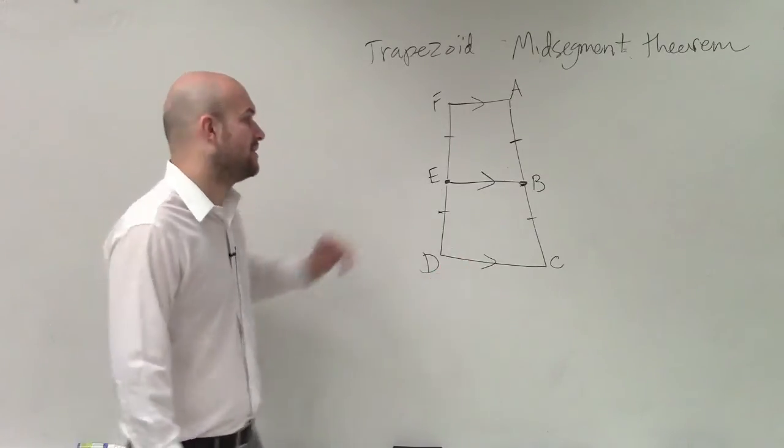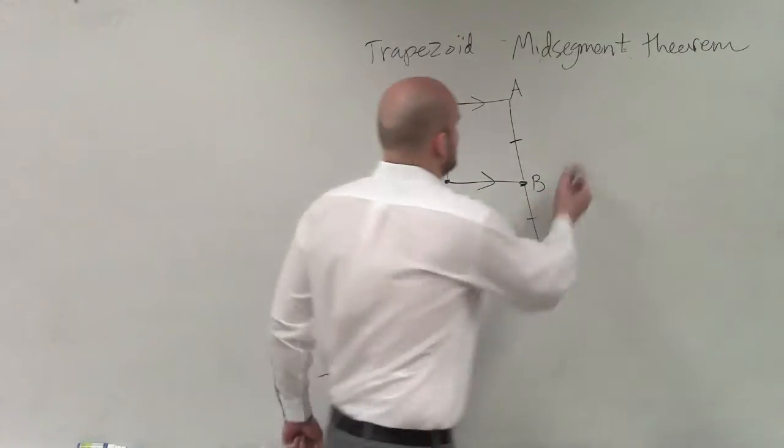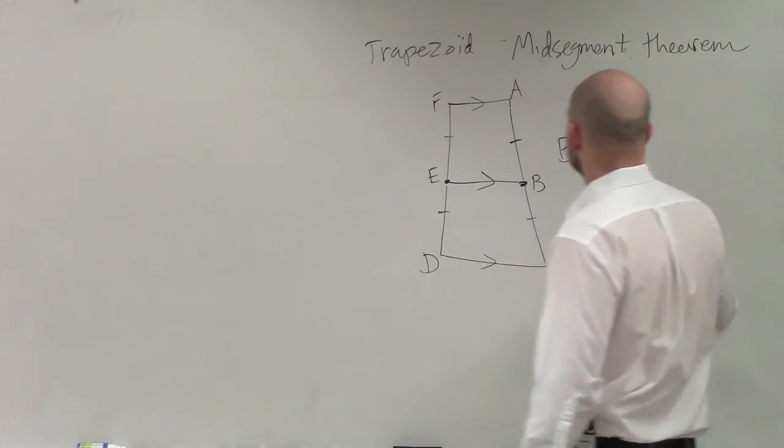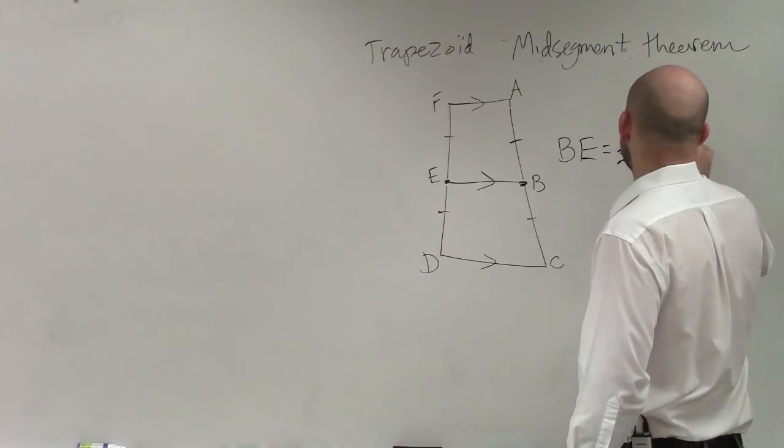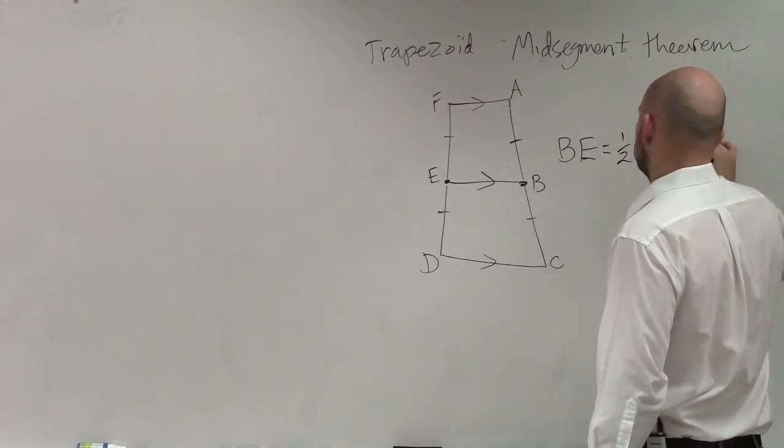The way that I determine the distance of this line goes like this: the length of BE is equal to one-half times AF plus CD.